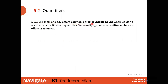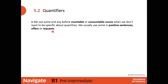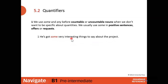We use 'some' and 'any' before countable or uncountable nouns when we don't want to be specific about quantities — when we don't know or are not sure about the quantity. We usually use 'some' in positive sentences, offers, or requests. For example: 'He's got some very interesting things to say about the project' — 'some' before 'things,' which is a countable plural noun, in a positive sentence.